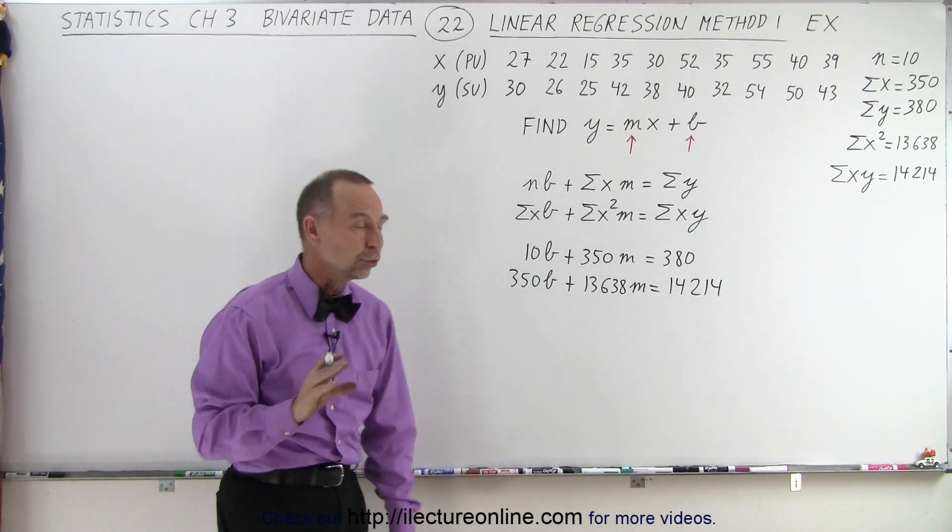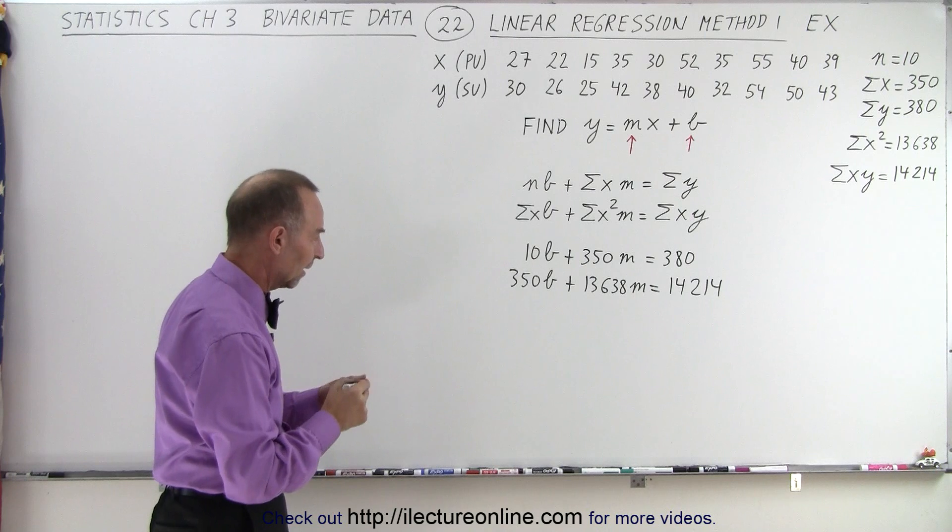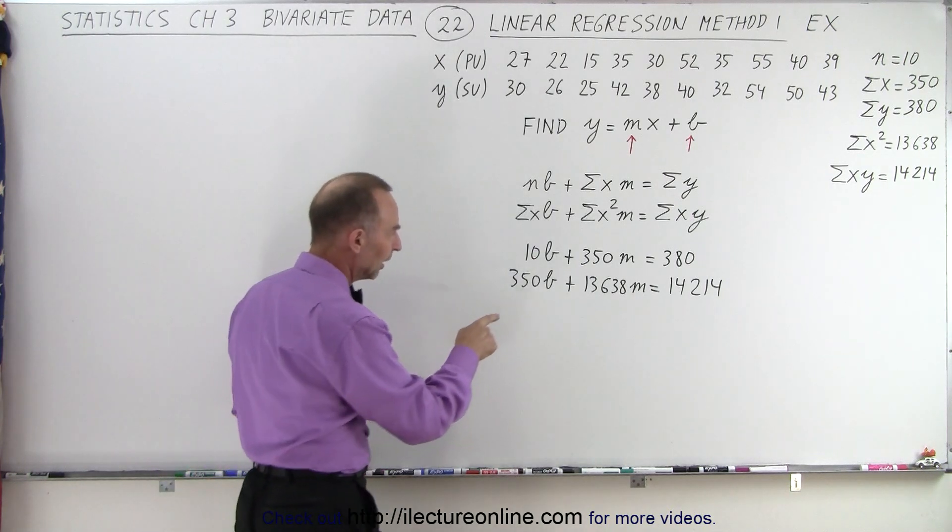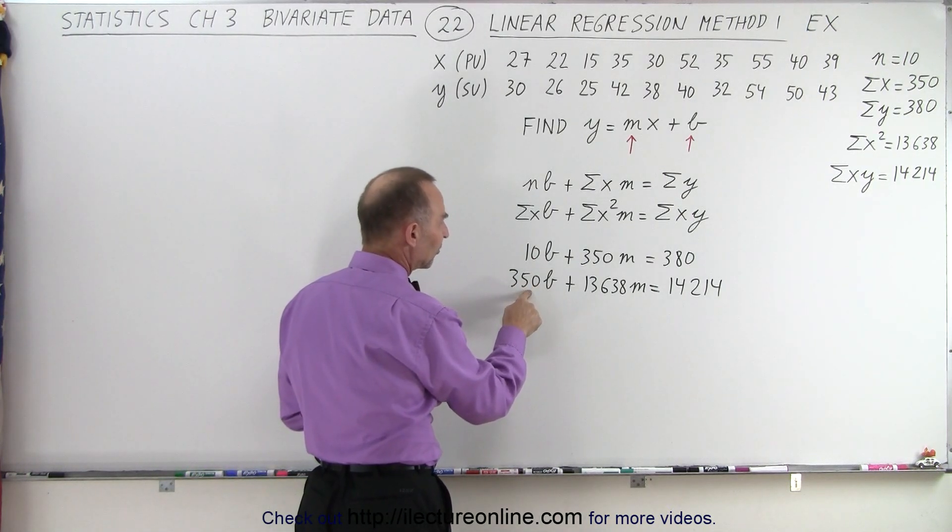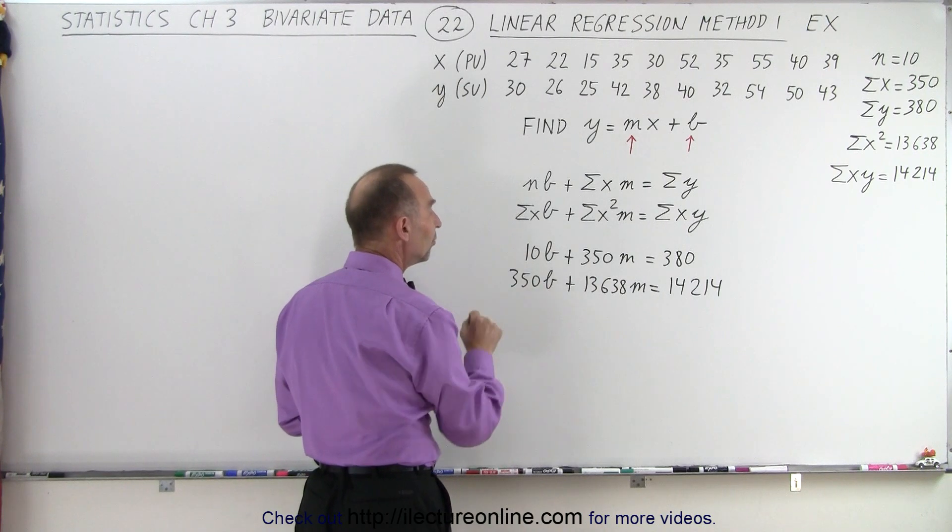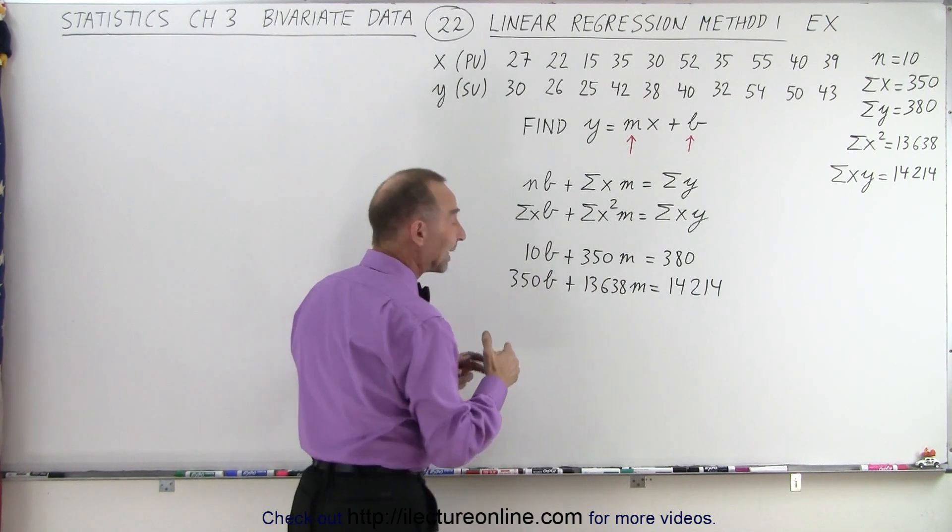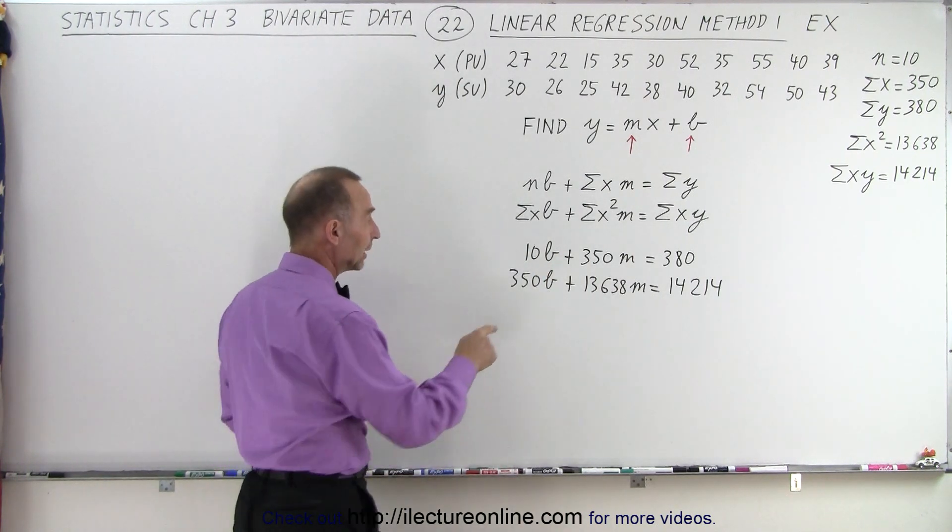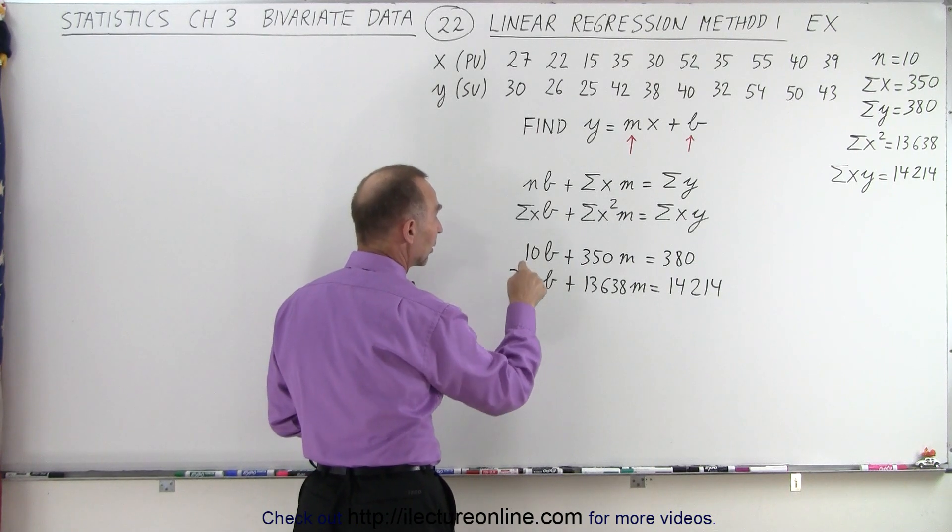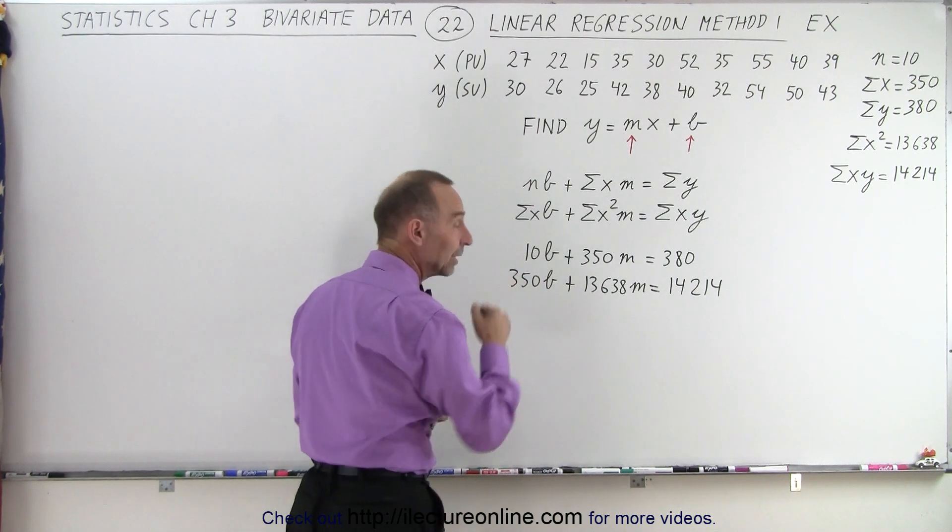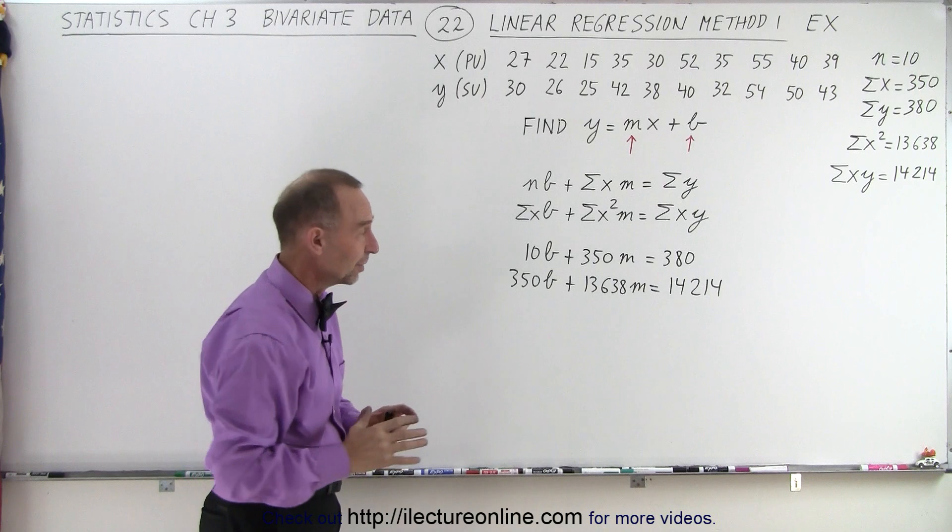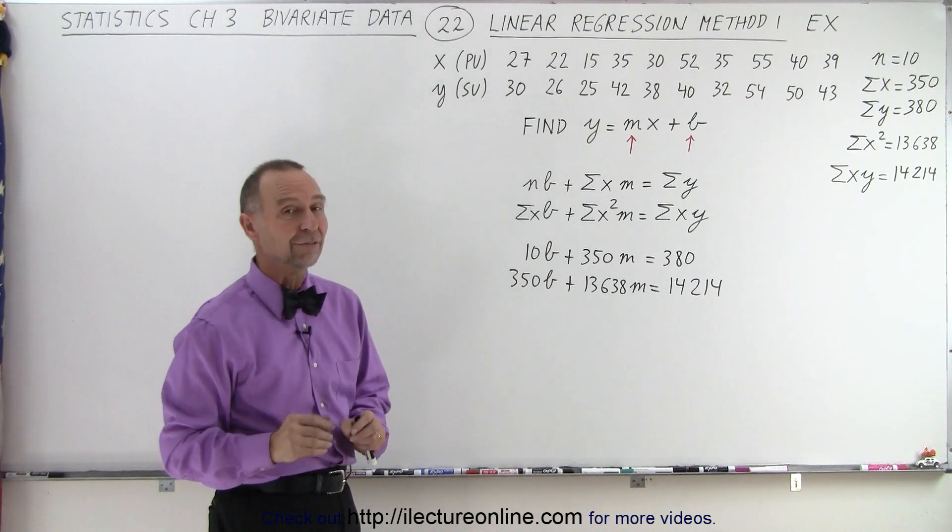And now we have to solve those two equations simultaneously. Now notice that this is exactly 35 times as big as this, so if I multiply the first row by negative 35, I will get a minus 350b here, and a plus 350b when I add the two together, they disappear, and only have one variable left. So let's try that.